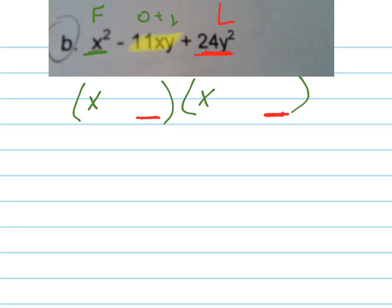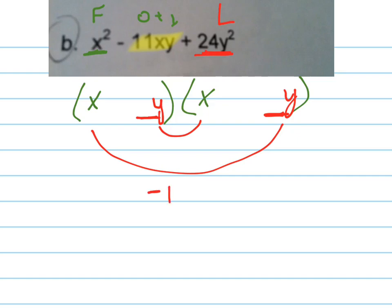I'm going to break up 24y squared. I know there's got to be a y on both of them, and I'm going to break up 24 in such a way that when I add the inside and the outside together, I get negative 11xy.